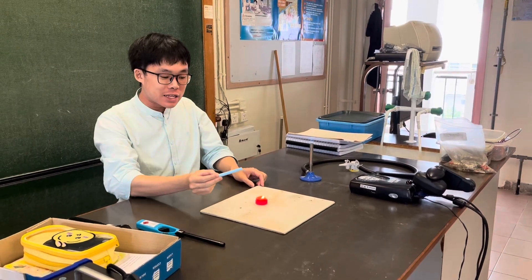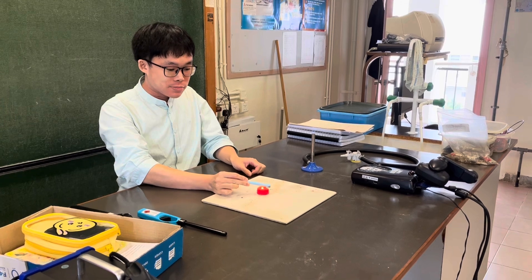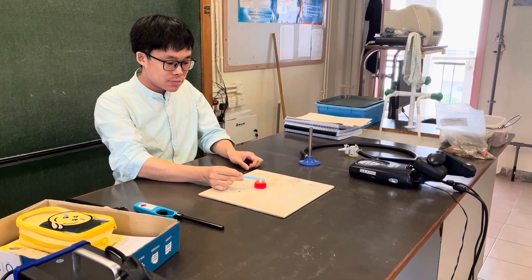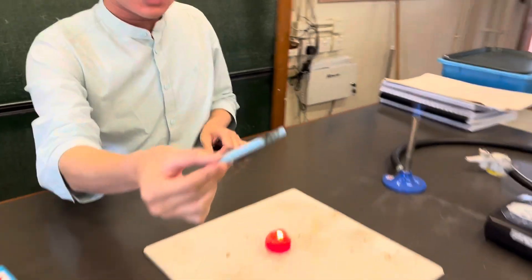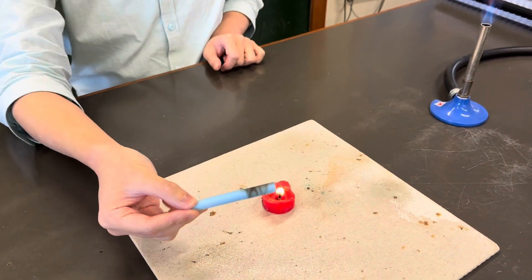So I have a chalk over here and I'm going to put it on a candle, and we are able to see there are black substances on it. Can you tell me what are they?